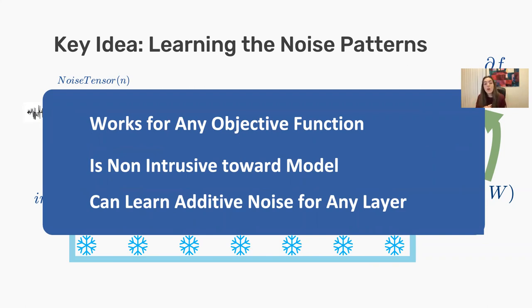It's also not intrusive to the model. So if you have a model that's already trained and deployed, you don't really need to change the weights of that model. And you can add this additive noise to any layer and it can work.